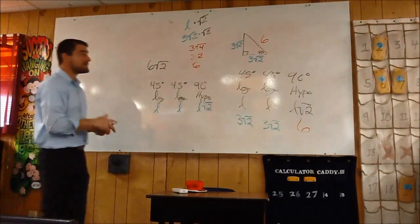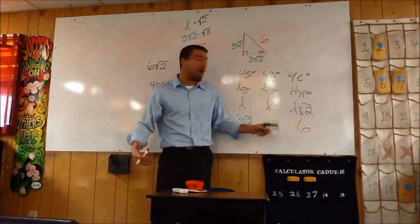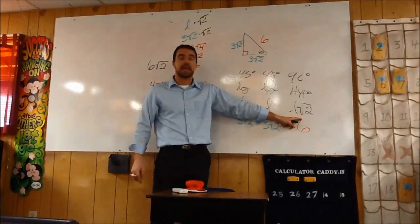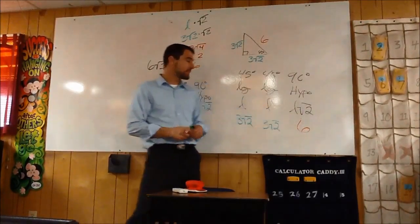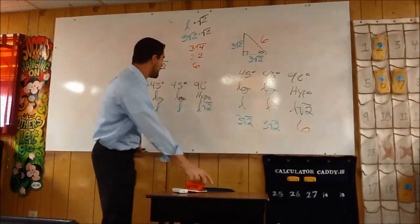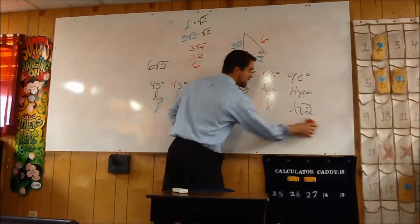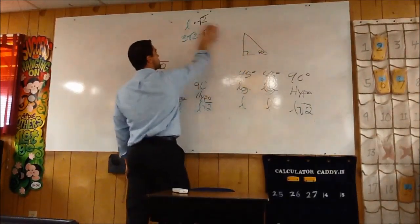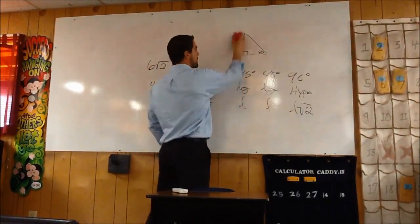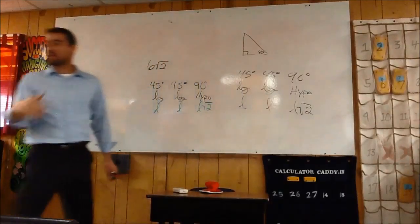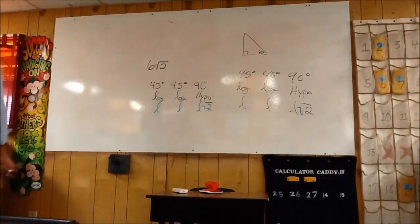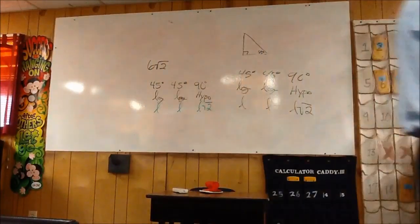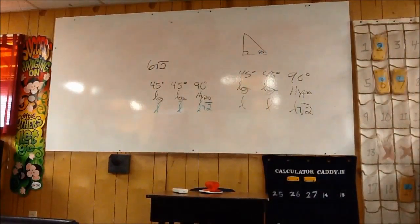For these problems, the hypotenuse won't always have a square root of 2 in it — that's not always the case. On these notes, if it's getting really crowded, just turn to the next page or the back.